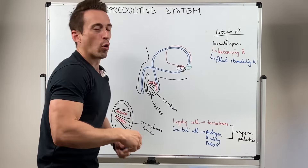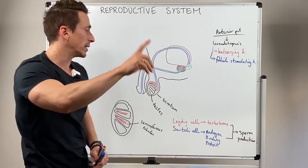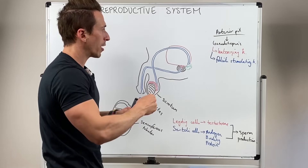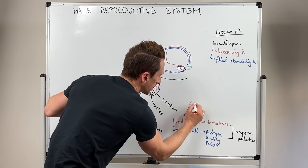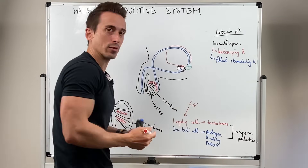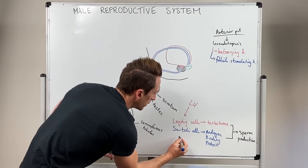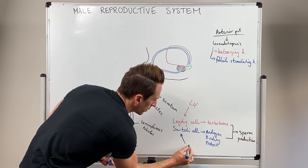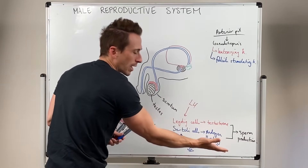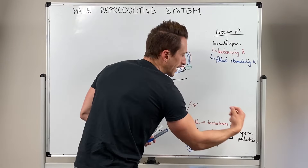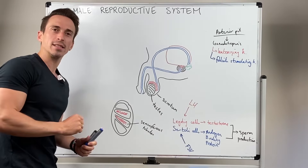Once a male hits puberty, these hormones begin to be released. Luteinizing hormone — drawn in red — stimulates the Leydig cells. Think of the L and the L. Follicle stimulating hormone stimulates the Sertoli cells. They produce testosterone and androgen binding protein respectively, and sperm production begins in the seminiferous tubules of the testes.